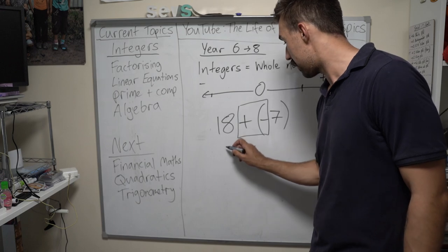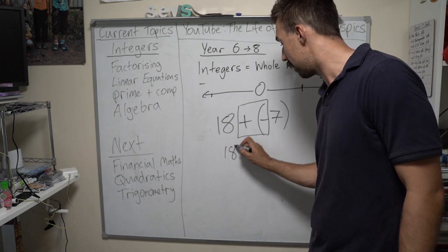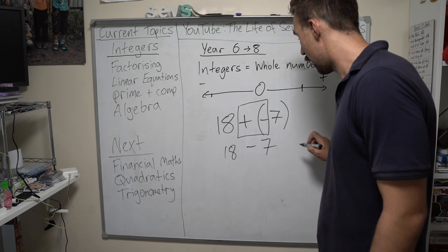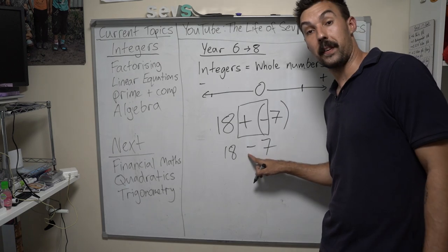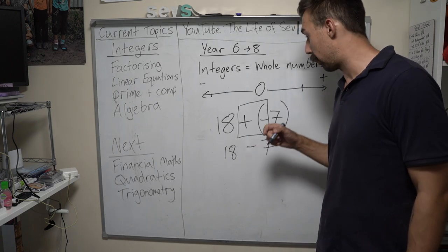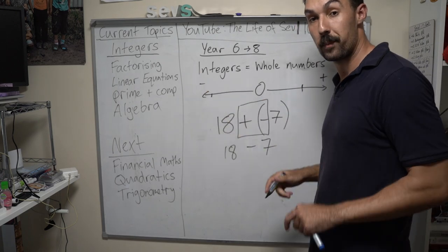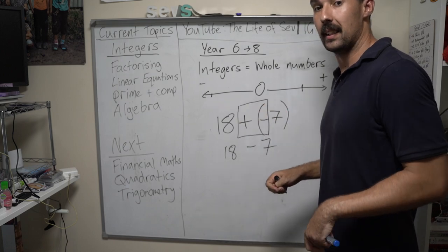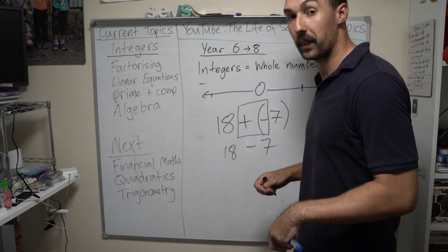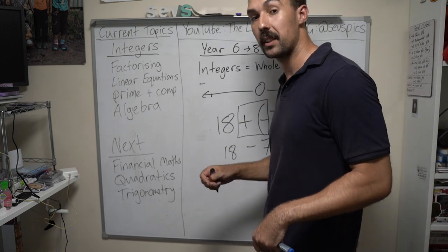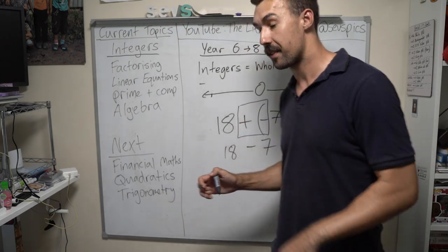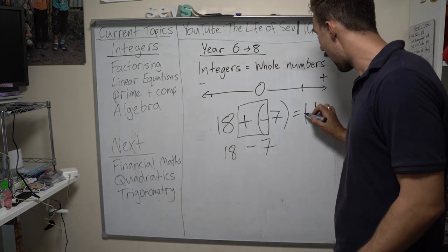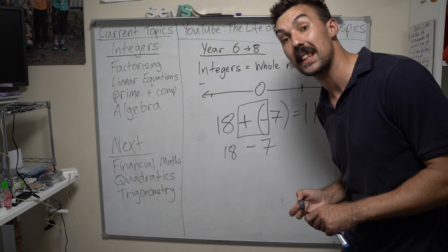So, it's 18 take away 7. We have the official direction — we're going to go to the left. So, 18 — we're going to take 7 paces that way: 18, 17, 16, 15, 14, 13, 12, 11. The answer is 11 and it's positive 11, but you don't have to write a plus in front of it.